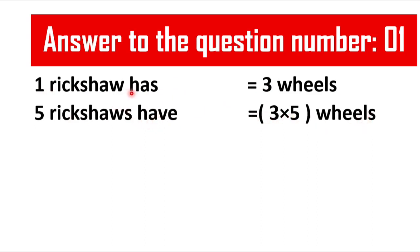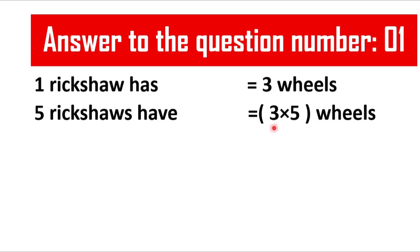Can you guess why I write 'has' here and why I write 'have' there? The answer is simple: there is just one rickshaw, and one is a singular number, so we write 'has.' But five rickshaws is a plural number, and that is why we write 'have.' I hope you all understand why I write 'has' here and 'have' there.